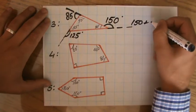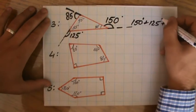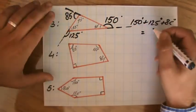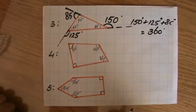What is the sum of the exterior angles for this triangle? That would be 150 plus 125 plus 85. Do you agree with that? 150 plus 125 plus 85, and those are all degrees. How much does that equal? That equals 360 degrees!